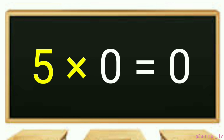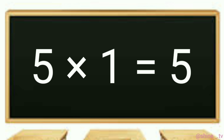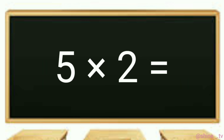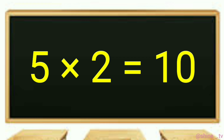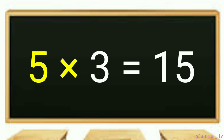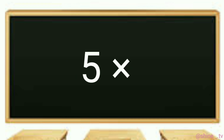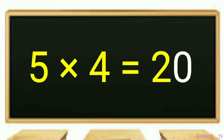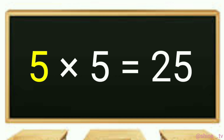5 times 0 is 0. 5 times 1 is 5. 5 times 2 is 10. 5 times 3 is 15. 5 times 4 is 20. 5 times 5 is 25.